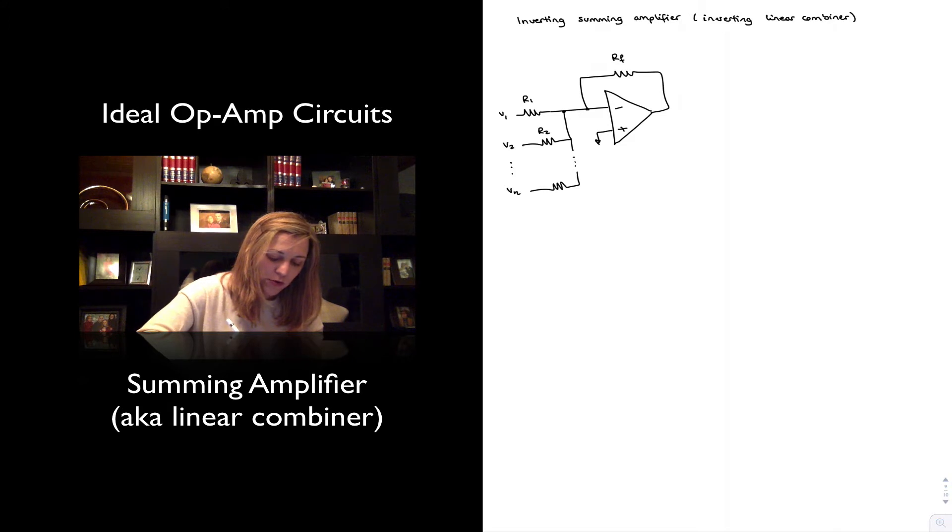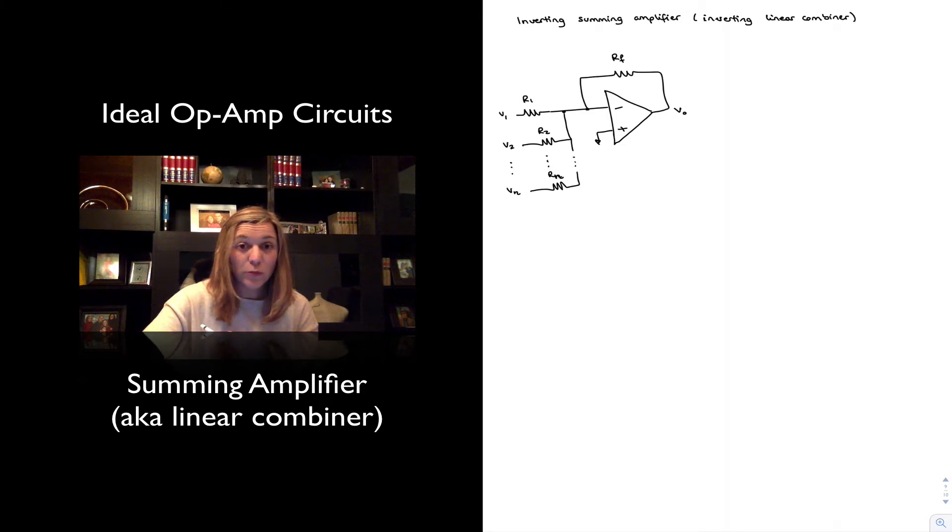And they are connected through resistors, which give us the possibility of providing those weights, resistors R1, R2, dot dot dot, all the way to RN. And then the output voltage is taken at the output of the op-amp. So this is the structure of the linear combiner circuit.